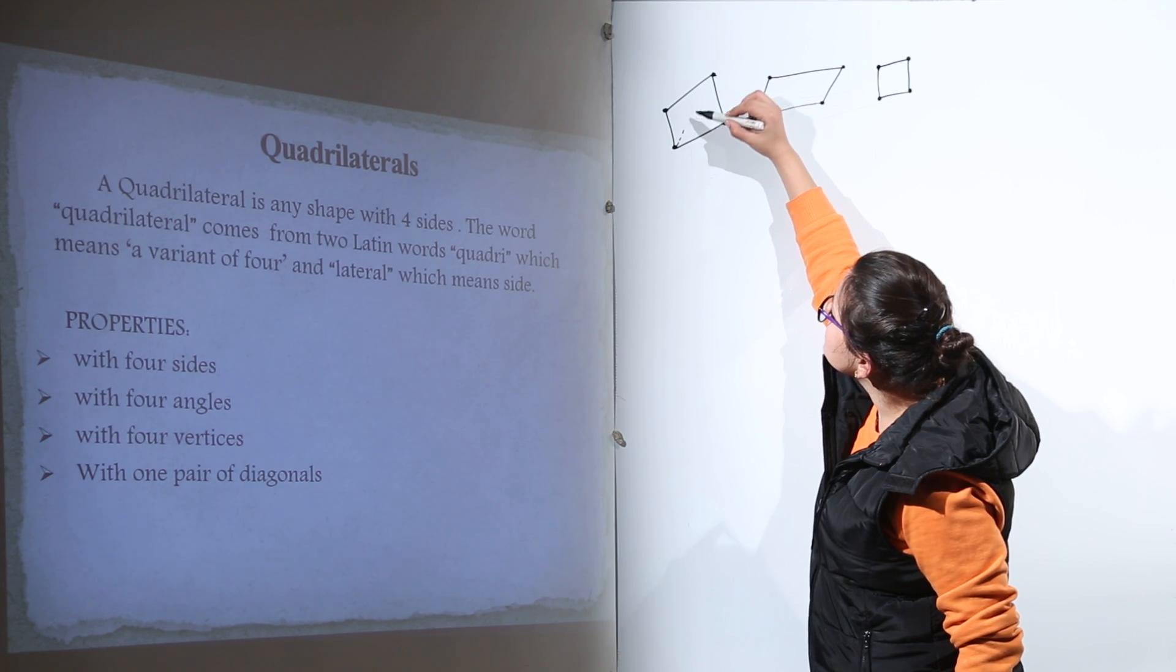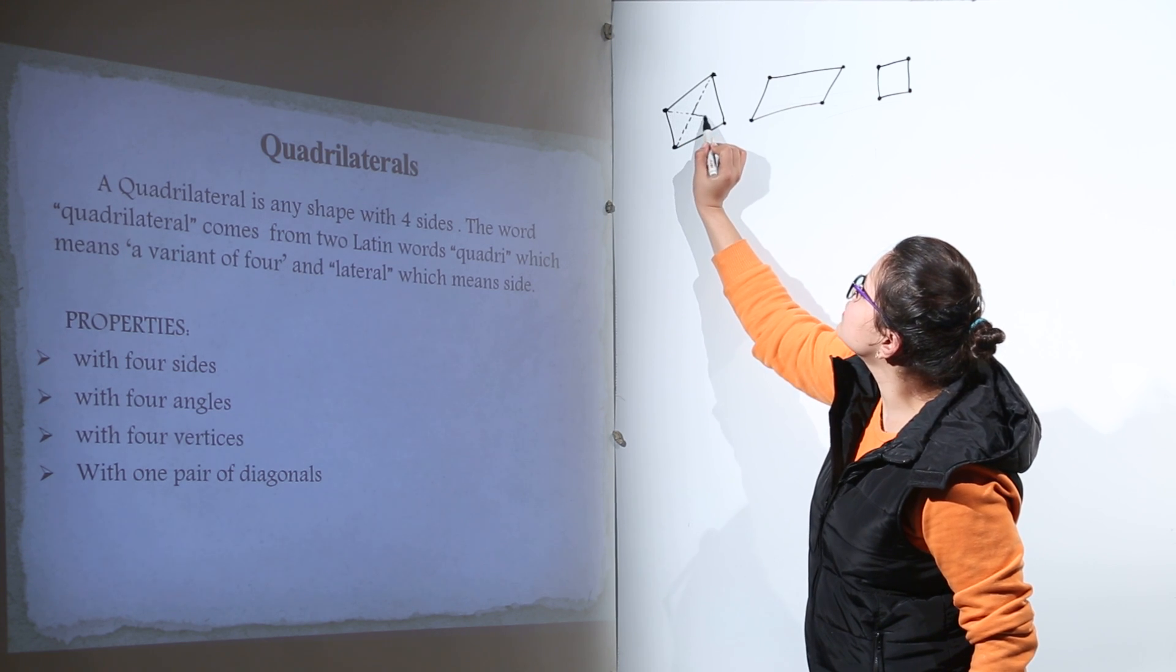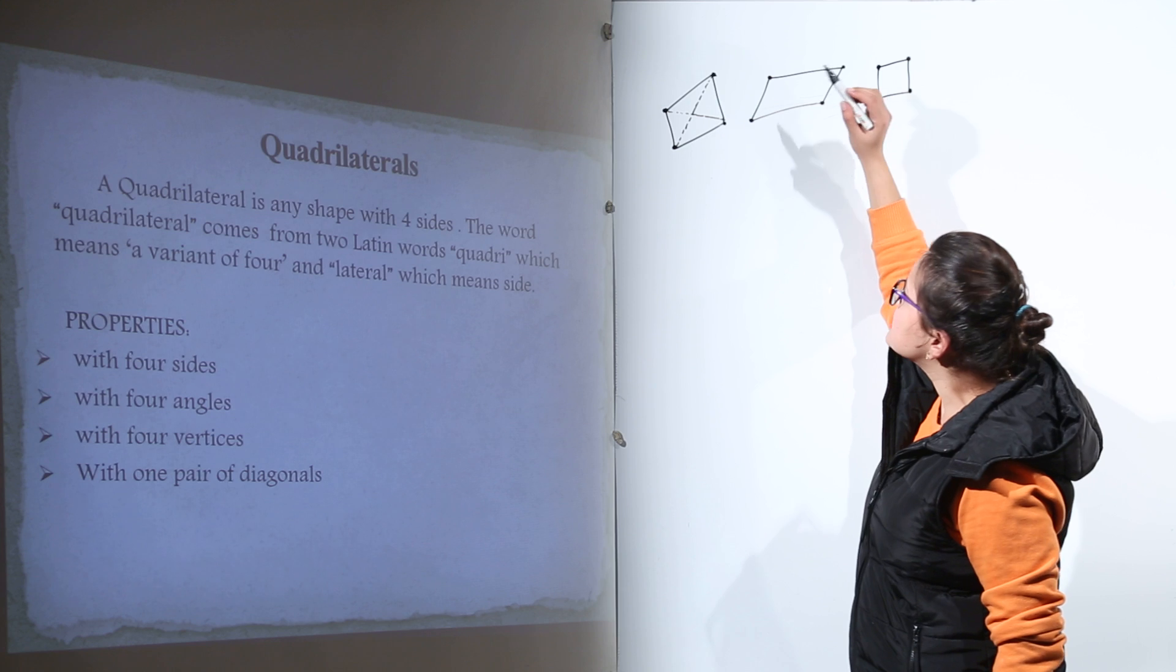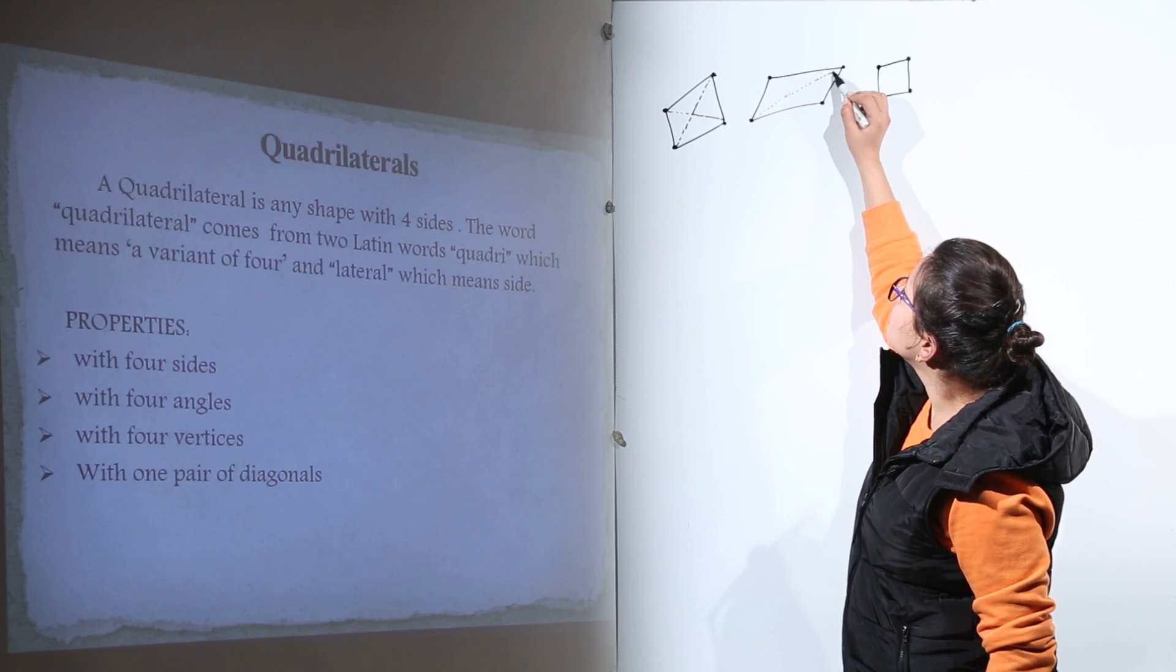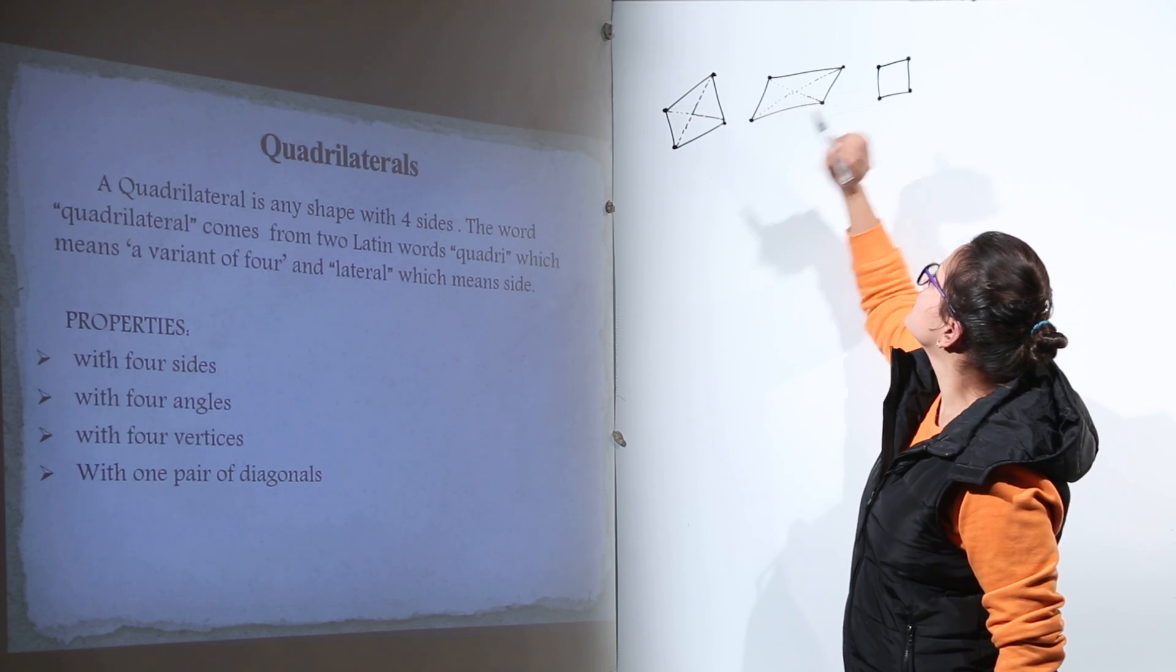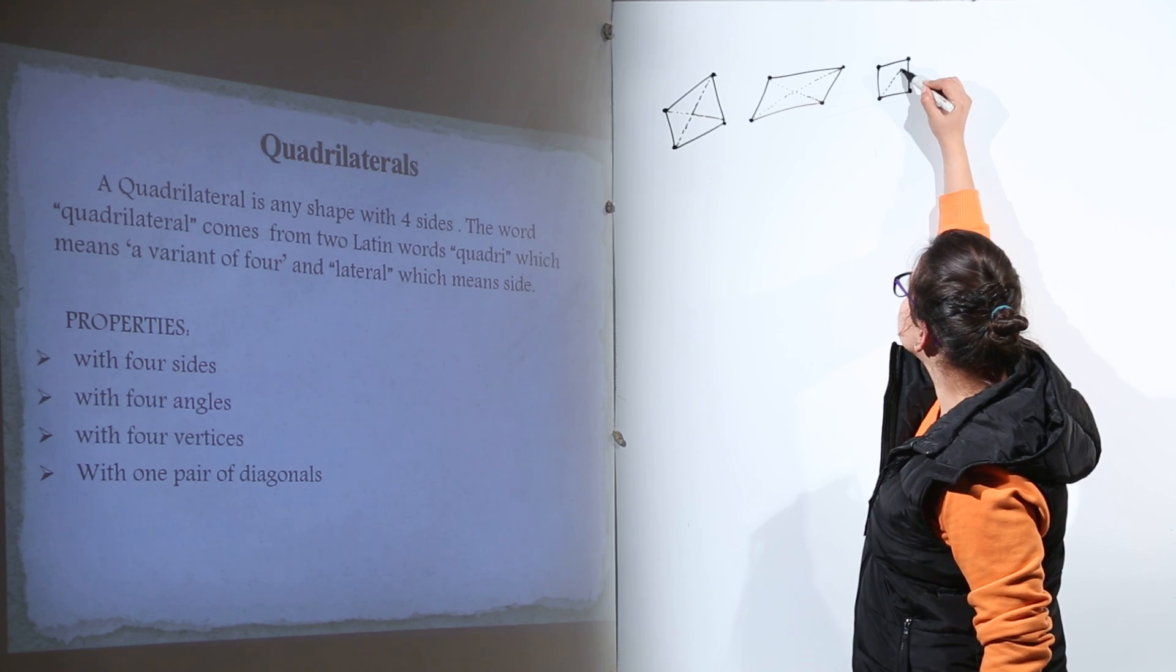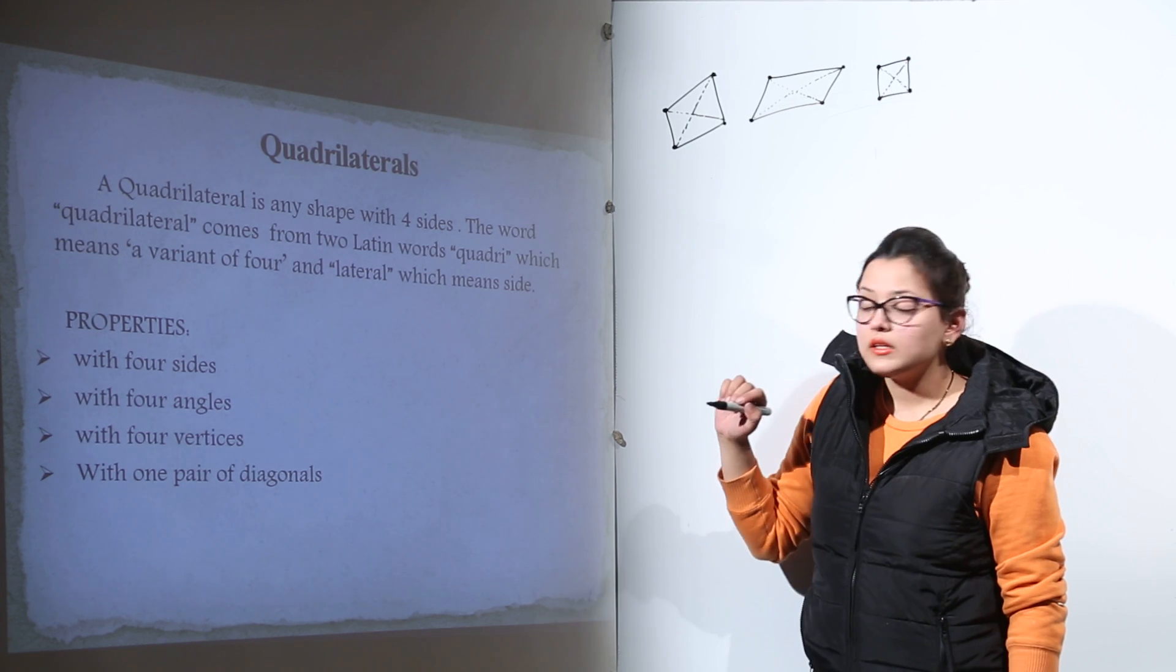Here we can see what happens when we draw two diagonals. Similarly, for this one, let us draw the two diagonals. We are joining the two non-consecutive vertices. On joining non-consecutive vertices, we get the diagonals of the quadrilateral.